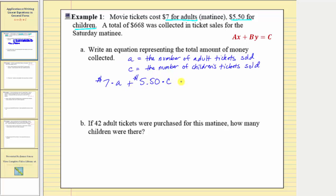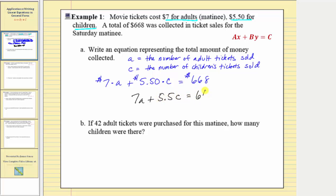This total must equal the total amount collected of six hundred sixty-eight dollars. Normally when writing an equation we leave the units off, so our final linear equation will be seven a plus five point five c equals six hundred sixty-eight.